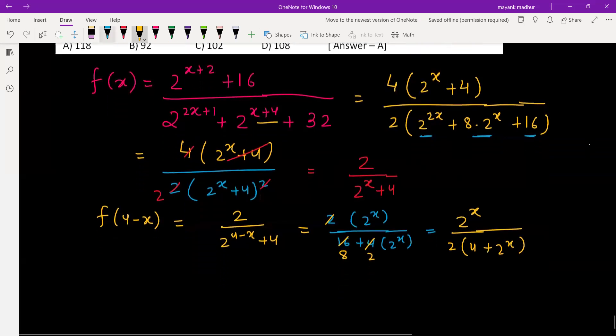Let's add these two: f(x) plus f(4 - x). Let's see how much it is. 2 divided by 2 raised to x plus 4, plus 2 raised to x by 2 times 4 plus 2 raised to x.